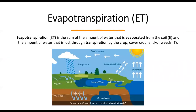To summarize, evapotranspiration is the sum of the amount of water that is evaporated from the soil and the amount of water that is lost through transpiration by the crop, cover crop and/or weeds. When we look at the water cycle, non-consumed water can be recaptured for downstream use or can replenish groundwater. Water consumed by evapotranspiration cannot.